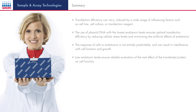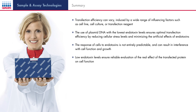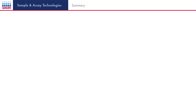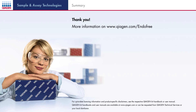In conclusion, transfection efficiency is influenced by a variety of different factors. Three key points should be noted. Firstly, low endotoxin levels should be maintained to avoid artificial effects and cellular stress. Secondly, the response of cells to endotoxins can vary between different cell lines and a critical level of endotoxins is hard to predict. And finally, low endotoxin levels are essential to accurately study the impact of the transfected protein. Thank you for participating in this Bench tutorial. We hope that you have found it useful.